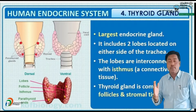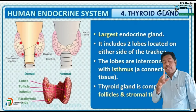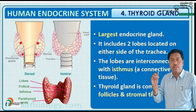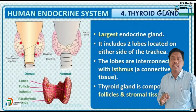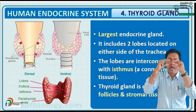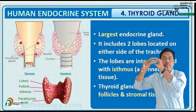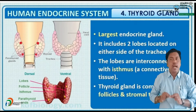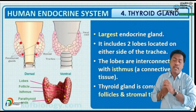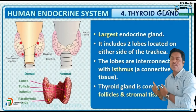The thyroid is the largest endocrine gland, with two lobes located on either side of the trachea. The lobes are interconnected by a band-like structure called the isthmus. The isthmus is composed of connective tissue. The thyroid gland is composed of follicular cells and stromal tissues.